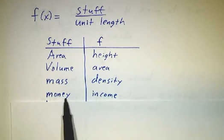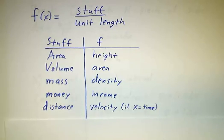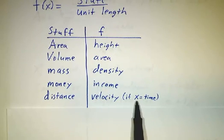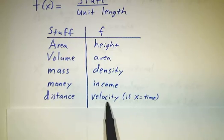If you're trying to figure out mass, the thing you integrate is the density because the density is the mass per unit length. If you want to figure out the total amount of money from an income stream, then f is the rate at which the money is coming in. If you want to figure out the distance you travel, then f is your velocity. In this case, we usually call the variable t for time instead of calling it x. In fact, we often call the distance x. But still, what we're integrating is the rate at which stuff is coming in.